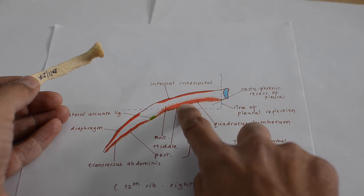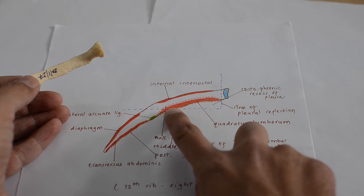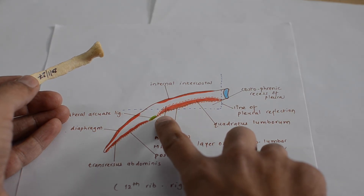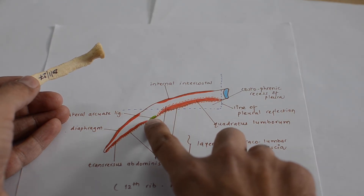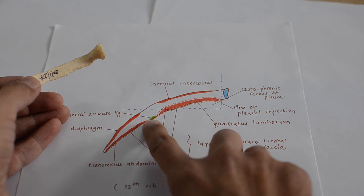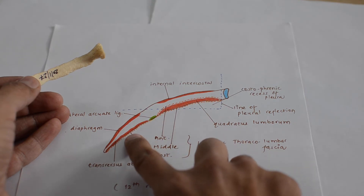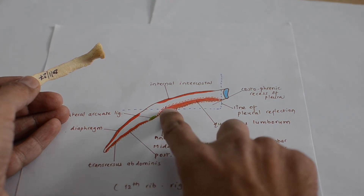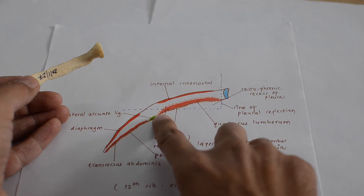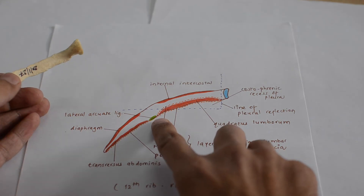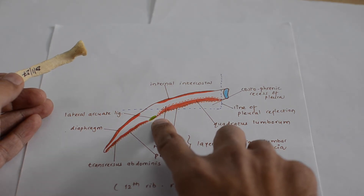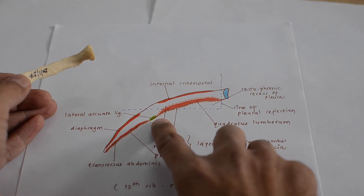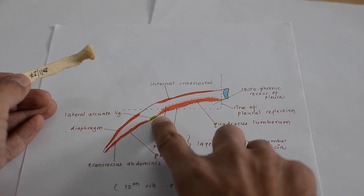Along the lower border there is attachment of the middle layer of the thoracolumbar fascia lateral to the quadratus lumborum. The lower border also provides attachment to the posterior layer of the thoracolumbar fascia, and next to the quadratus lumborum there is attachment of the lateral arcuate ligament of the diaphragm along the lower border.